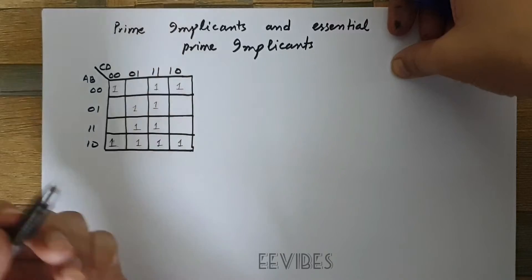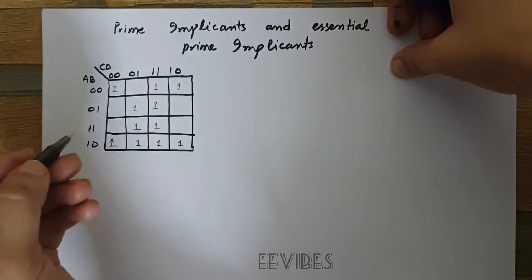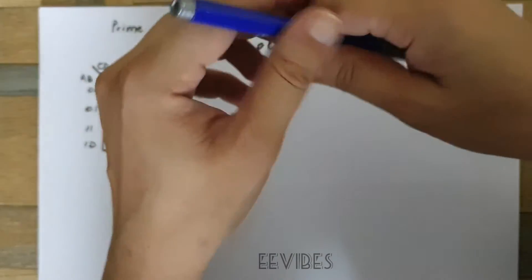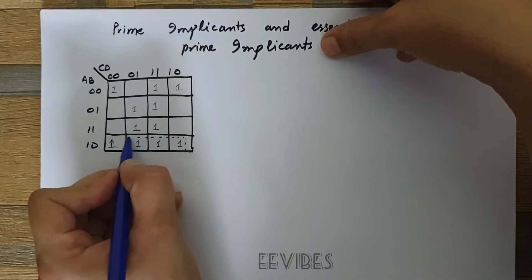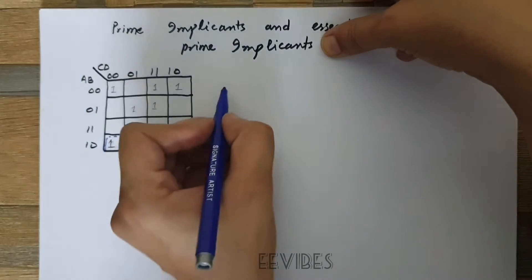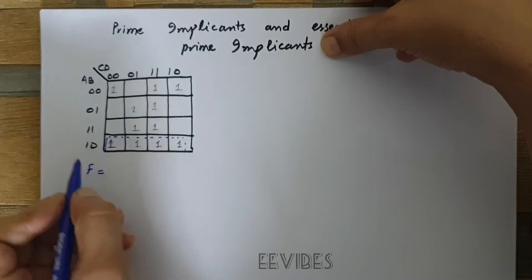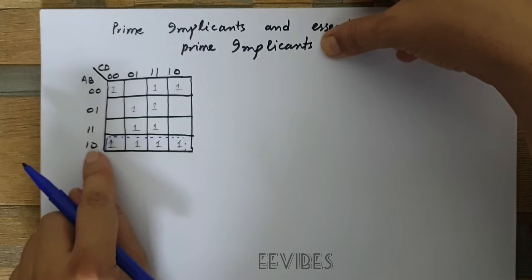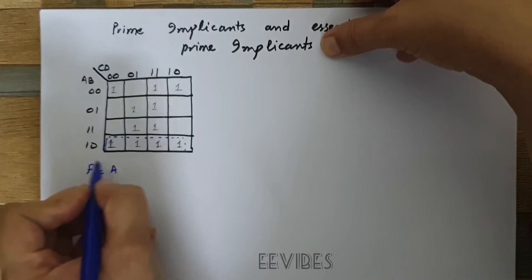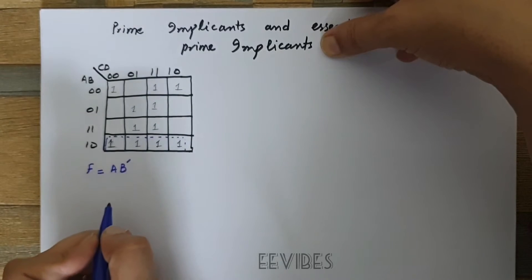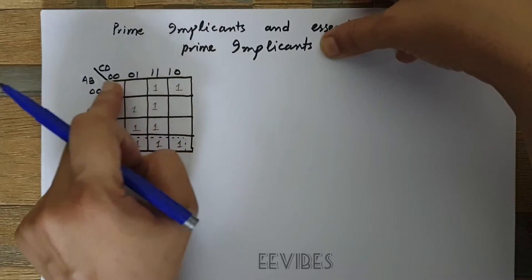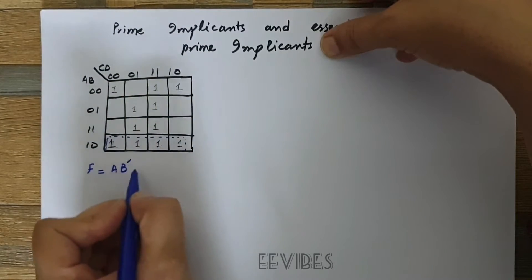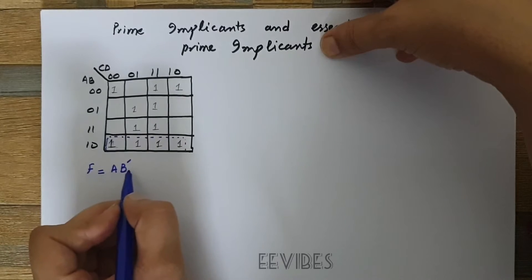I'll show with an example the possible ways to combine these squares. Starting with this, I'll combine these four ones in the last row. The expression is f equals AB', because in this row A equals one and B equals zero, so A is written as-is while B is complemented. Moving through the columns, C and D are always changing, so we do not write C and D in this expression.